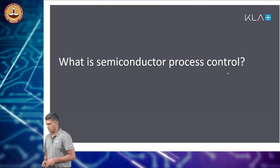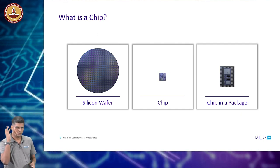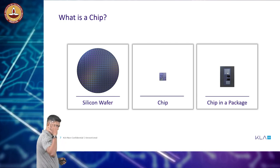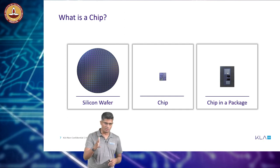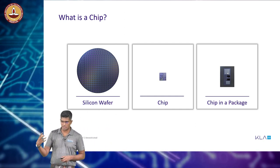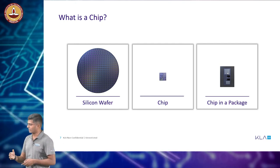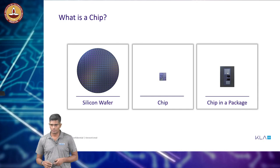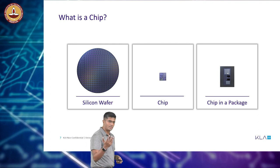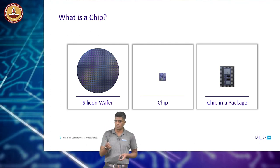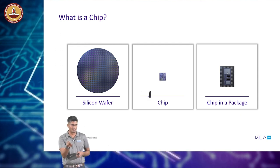Let us talk about what semiconductor process control actually is. Here are three pictures clarifying what a wafer is, what a chip is, and what a chip-in-package is. Most of you have probably seen what we call a chip-in-package — that is the picture on the right, which is what you get when you go buy an Intel CPU or an AMD CPU. What is actually sold in the market is a chip-in-package. But to get there, you first have to get the chip. The chip that powers your computer today is about the size of your thumbnail.